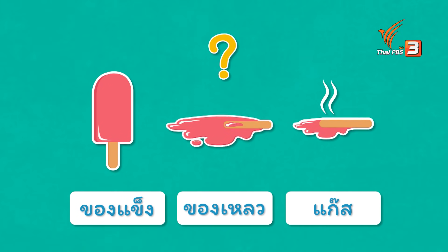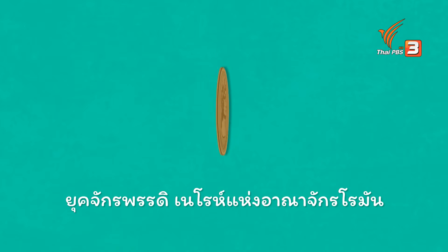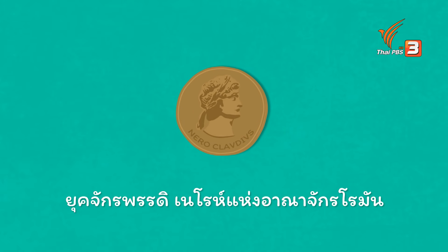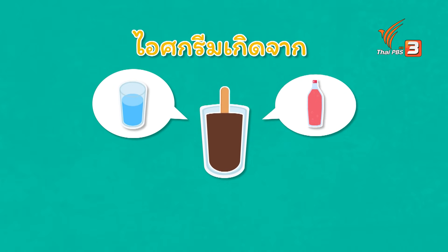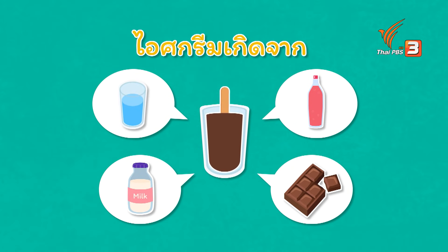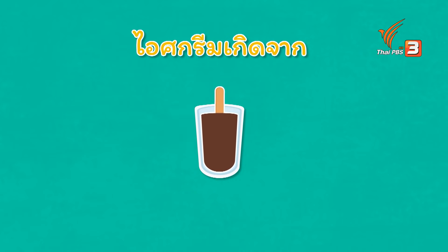แล้วทำไมเราถึงเห็นทั้ง 3 สถานะ จากไอสกรีมที่เรากิน (And why do we see all 3 states from the ice cream we eat?) This story goes back to the first ice cream in history — but we don't need to go that far. Ice cream is made from water, sweet liquid, milk, and chocolate, which are liquids that can move.